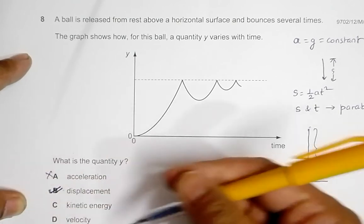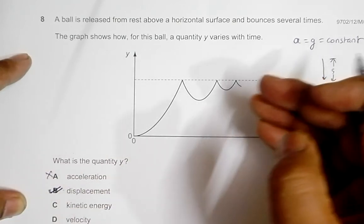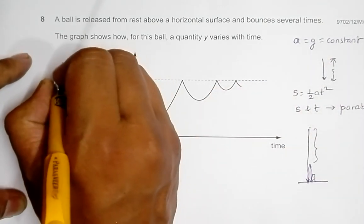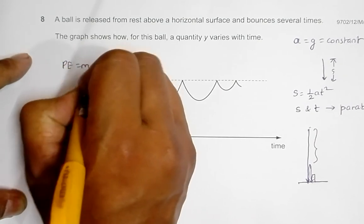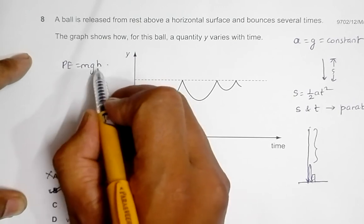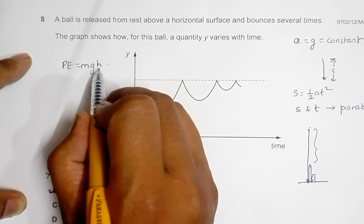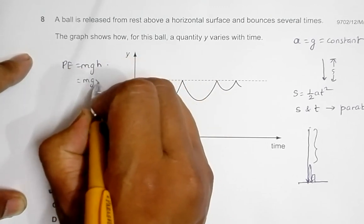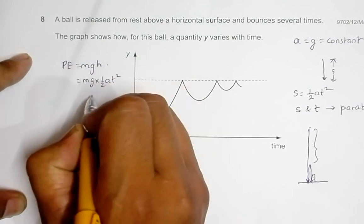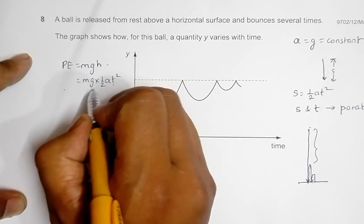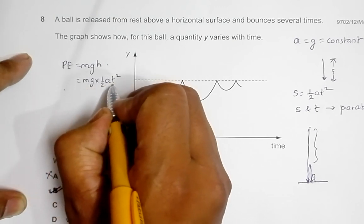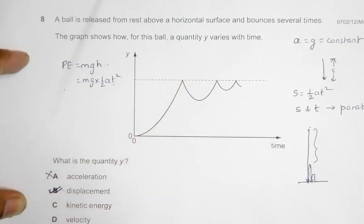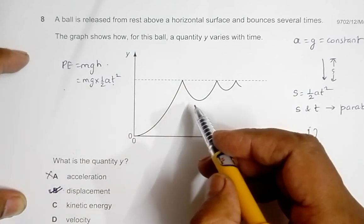In choice number C we have kinetic energy. It should follow some sort of a linear relationship because when the ball falls, the potential energy decreases and the KE increases. PE is equal to mgh, so it decreases linearly with height. This H equals 1/2 at², so mg into 1/2 at². According to time, PE should decrease somewhat like a parabola, and KE should increase somewhat parabolically. But after bouncing, the phenomenon is not the same as this, so we can disregard it.